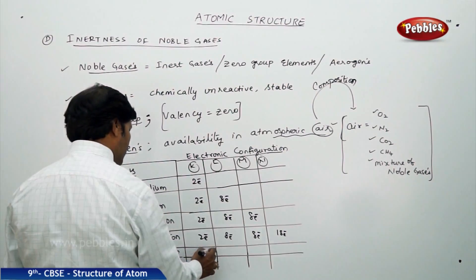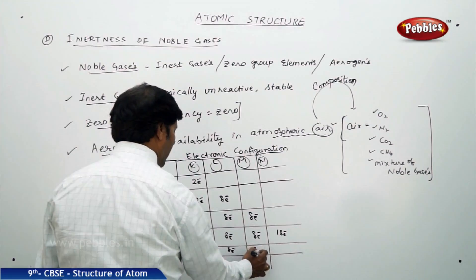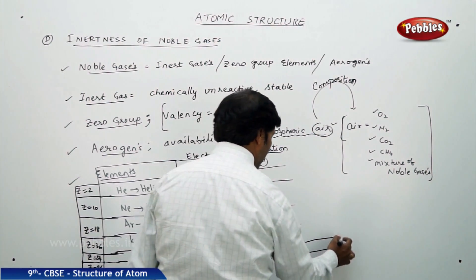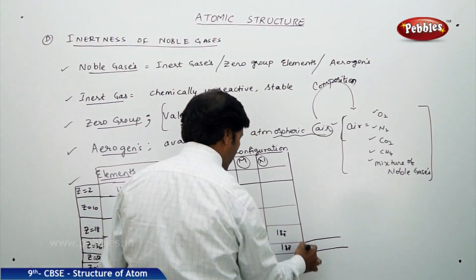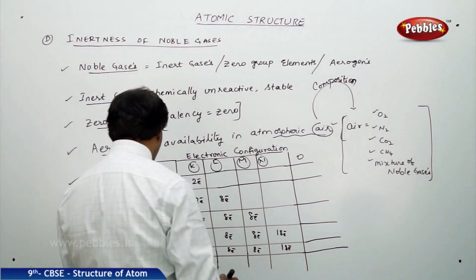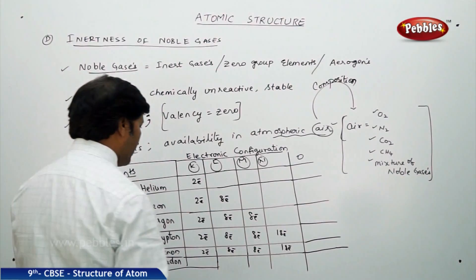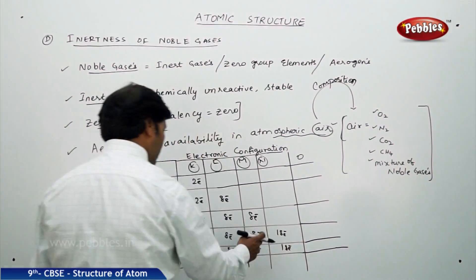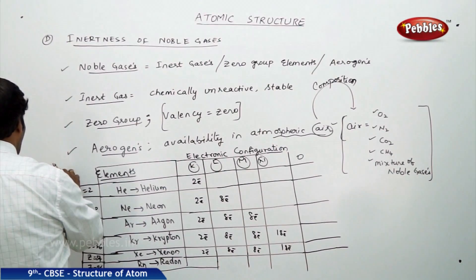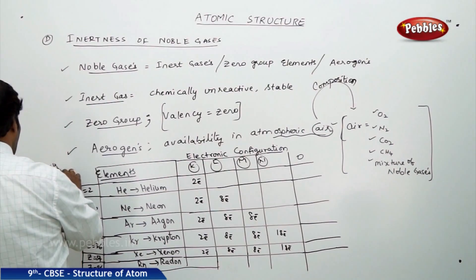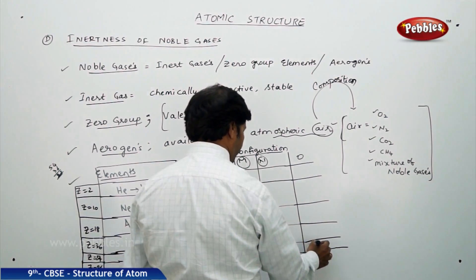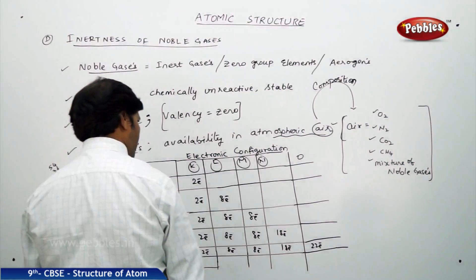For xenon with atomic number 54, the electron distribution starts with 2 electrons, then 8, then 8, then 18, then 18 more electrons, and we need to go to one more shell — the O shell — to accommodate the remaining electrons, particularly in the case of xenon and radon.